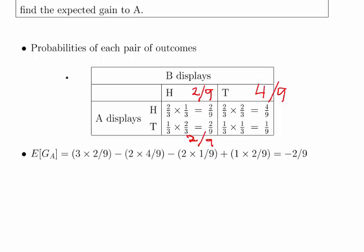Nope, I got that the wrong way around. Sorry, this is my mistake. That should be 1 over 9, and that should be 2 over 9 there. Sorry, but here it's done the right way.